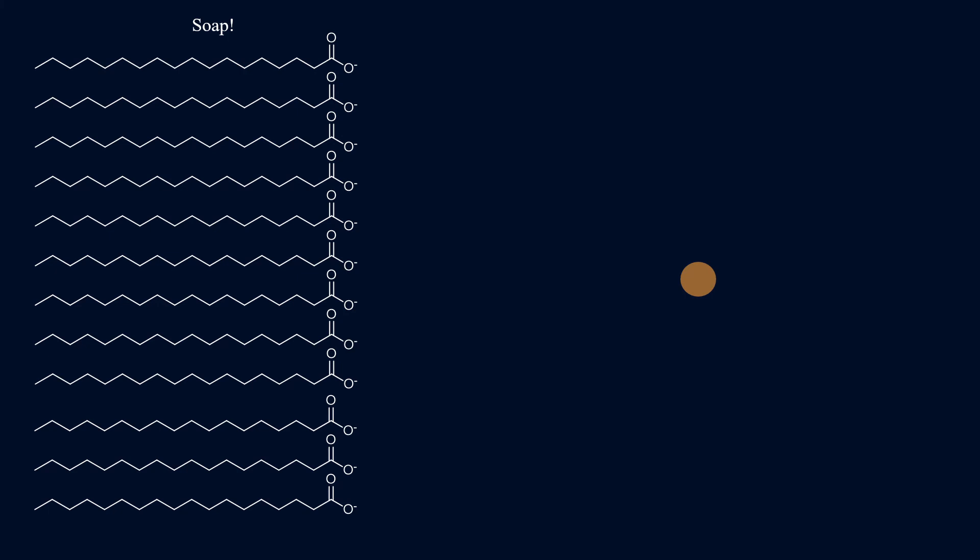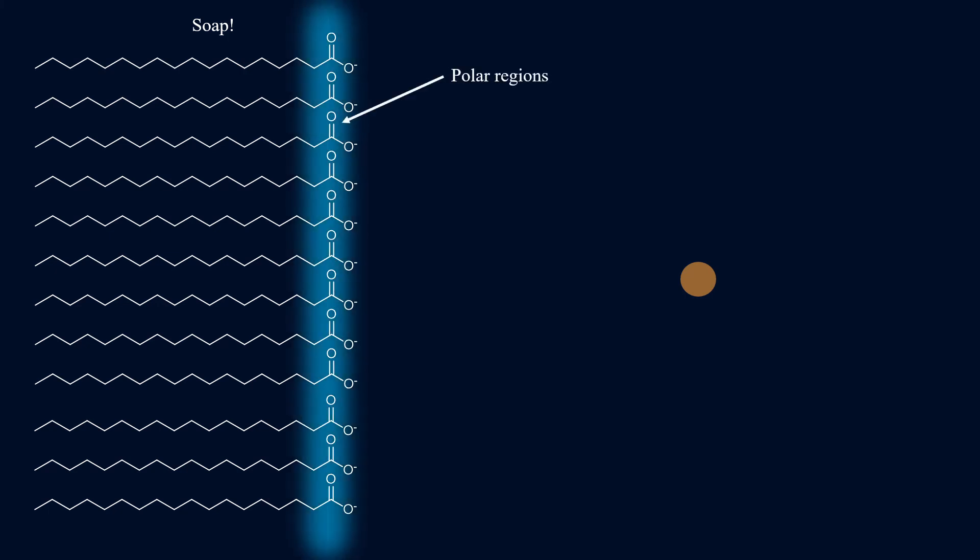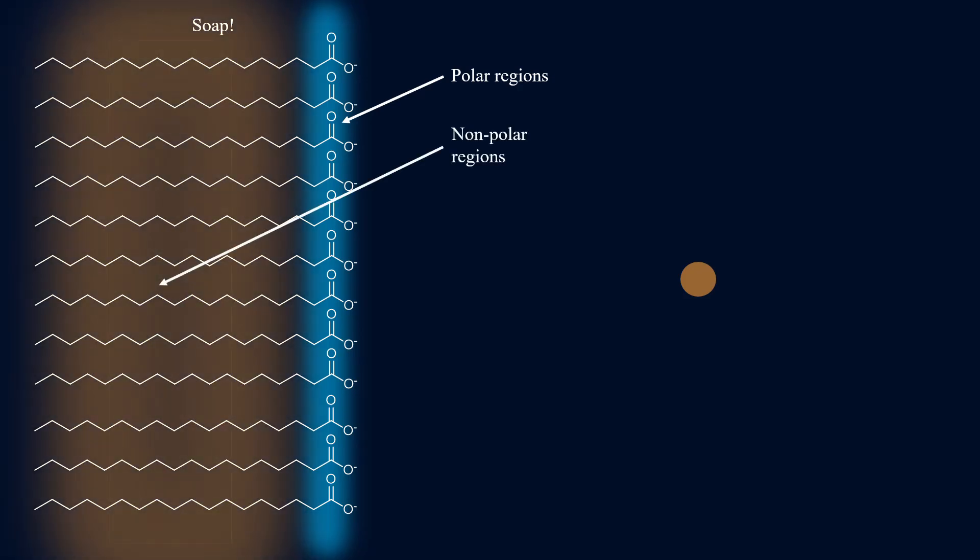Now look carefully at these soap molecules. They contain polar regions, these carboxylate portions. They are very polar. They're good hydrogen bonders. They should interact well with water. And they also contain a very low polarity region, which are the hydrocarbon tails on the other side.